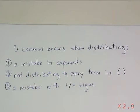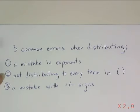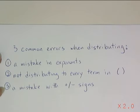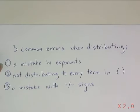Stage two of our notes. Let's talk about three common errors that people make when they're distributing. One, they might make a mistake in their exponents. Two, they might not distribute to every term in their parentheses. Or three, they might make a mistake with their plus and minus signs. Let's first talk about category number one, a mistake in exponents.